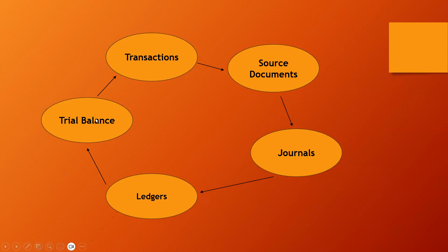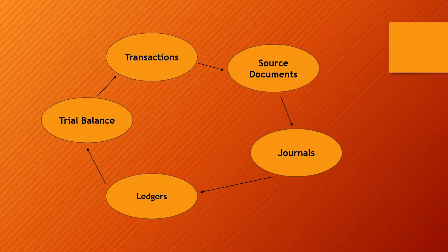So what happens is: let's say we open our business on 1 March. In March we have our transactions, source documents, journals, ledgers, and trial balance. That trial balance has one month in it. This trial balance with one month becomes the opening balance of the following month, April. So April has opening balances — because March is not the first month anymore — and March's closing balances become April's opening balances.